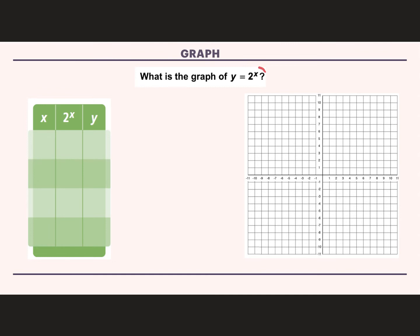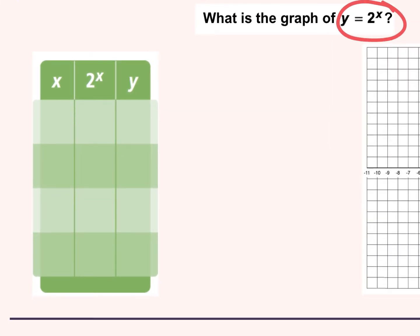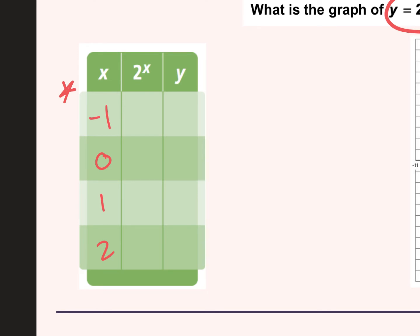So let's graph. We're graphing 2 to the power of x. How can I figure out where points on my graph are going to be? We pick random points and plug them into the equation. Good numbers to plug in are negative 1, 0, 1, and 2 — it's always good to plug in both a negative and positive number. These are good numbers to work with because they're small and the easiest to plug in. So step one is plug in numbers.